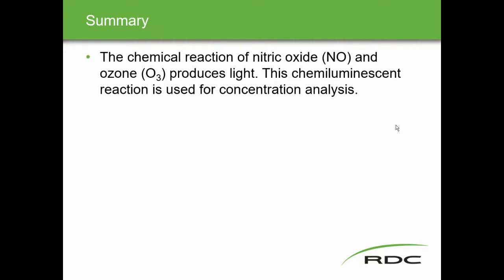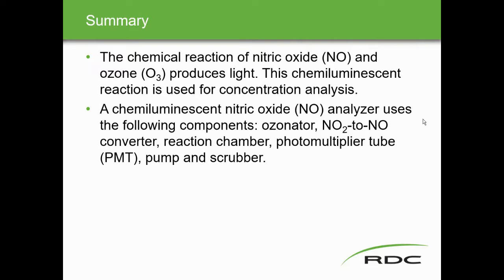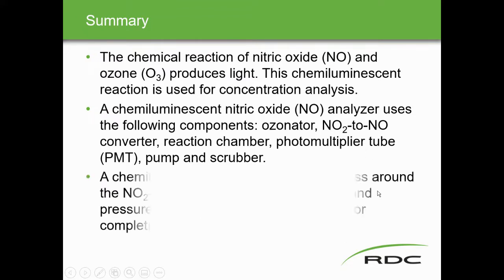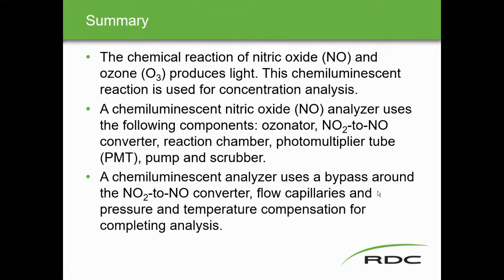Summary: The chemical reaction of nitric oxide and ozone produces light — this chemiluminescence reaction is used for concentration analysis of NO2. The chemiluminescent nitric oxide analyzer uses the following components: ozonator, NO2-to-NO converter, reaction chamber, photomultiplying tube, and pump and scrubber. The analyzer bypasses the NO2-to-NO converter to switch between NOx and NO modes; subtracting NO from NOx gives the NO2 concentration.